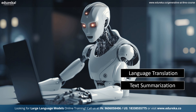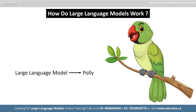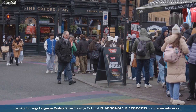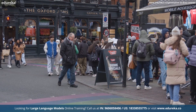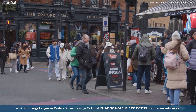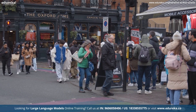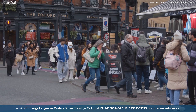To help you understand better, think of a large language model like a smart parrot named Polly. Polly lives in a busy town where she learns to talk by listening to people chatting. She picks up words and phrases from their conversations, just like we learn from hearing others speak.